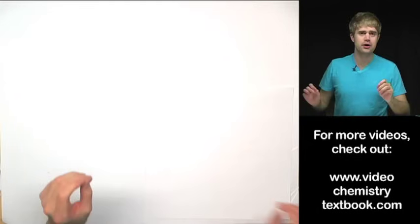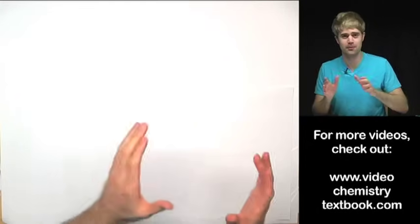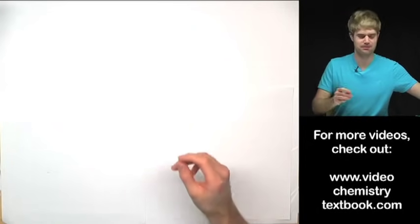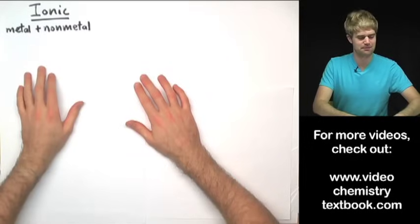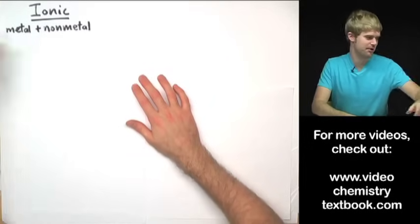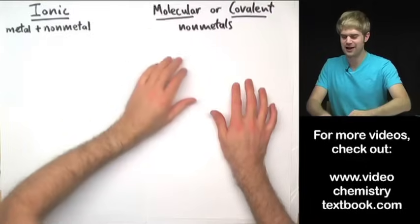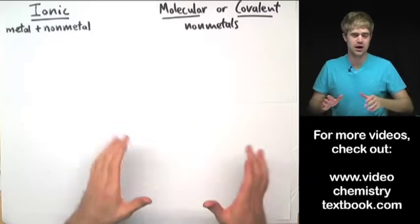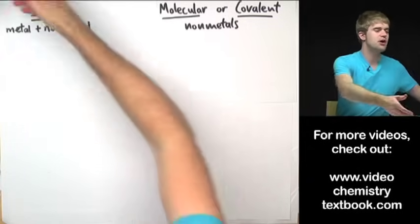So how can you tell whether something is ionic or molecular? Well it depends on the elements that make them up. Ionic compounds are made of metals and non-metals, whereas molecular, also known as covalent compounds, are made of only non-metals. Let's do a couple of practice problems to work on this.